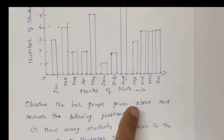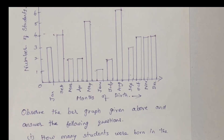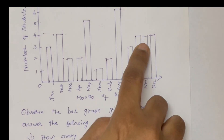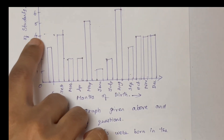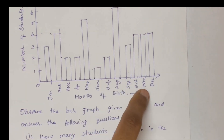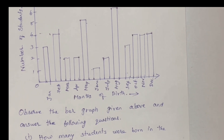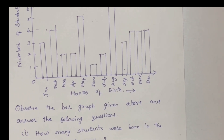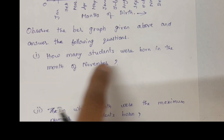Look at the graph. In the month of November, the bar shows the number 4. So 4 students were born in the month of November.